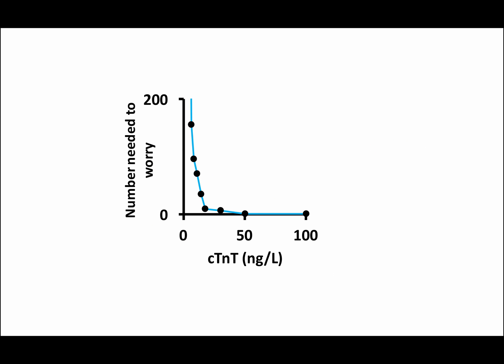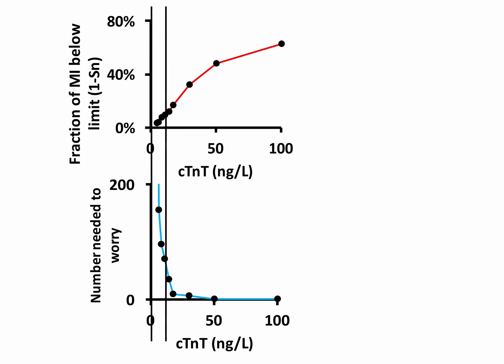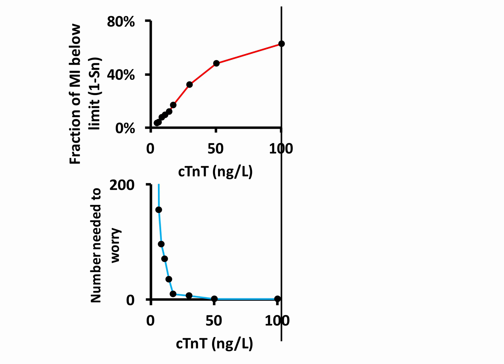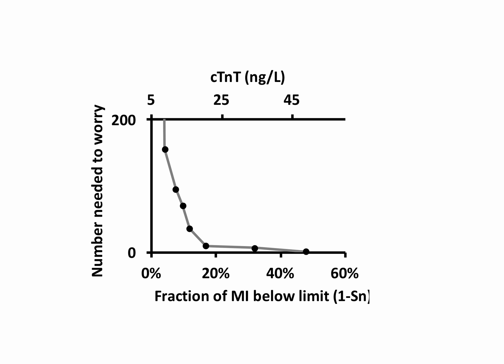If I plot the baseline Troponin T-levels and number needed to worry together, you see the relation between them. We can combine one minus sensitivity and number needed to worry at different baseline Troponin T-levels. This data can be plotted with Troponin T-levels on the second x-axis and shows the relation between baseline Troponin T-level, risk of missing myocardial infarction, and number needed to worry. The fraction of false positives increases exponentially below 20 nanograms per liter — an effect of the green false positive monster. If you try to avoid missing patients with myocardial infarction using only the Troponin T test, you will generate an exponentially increasing number of false positives in the process.